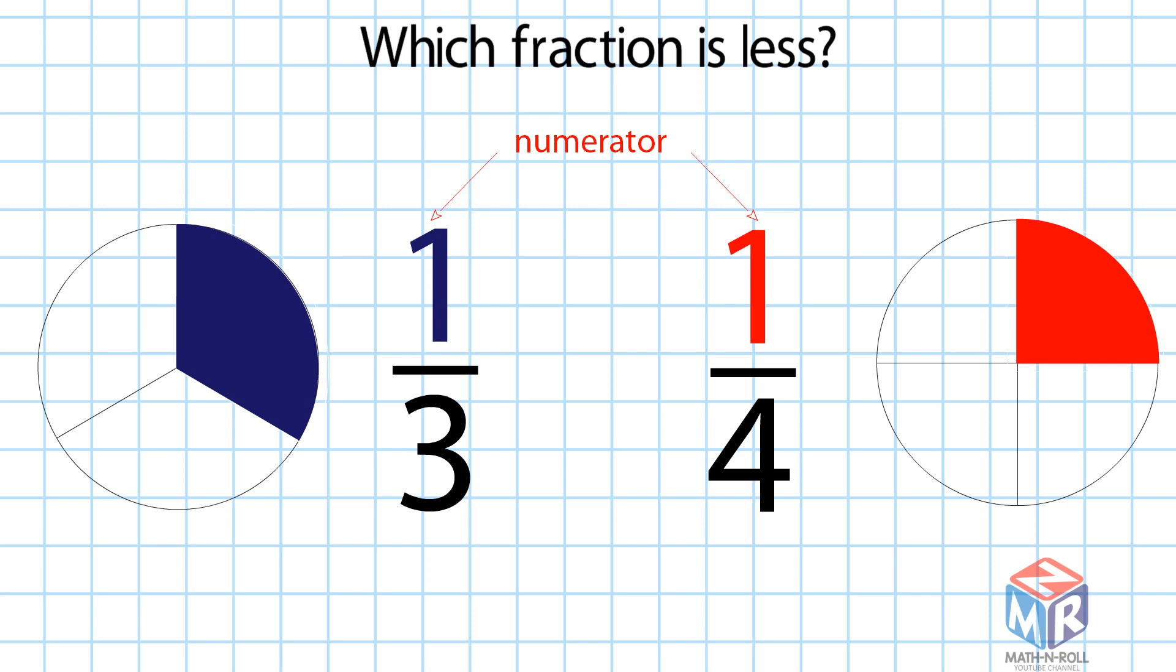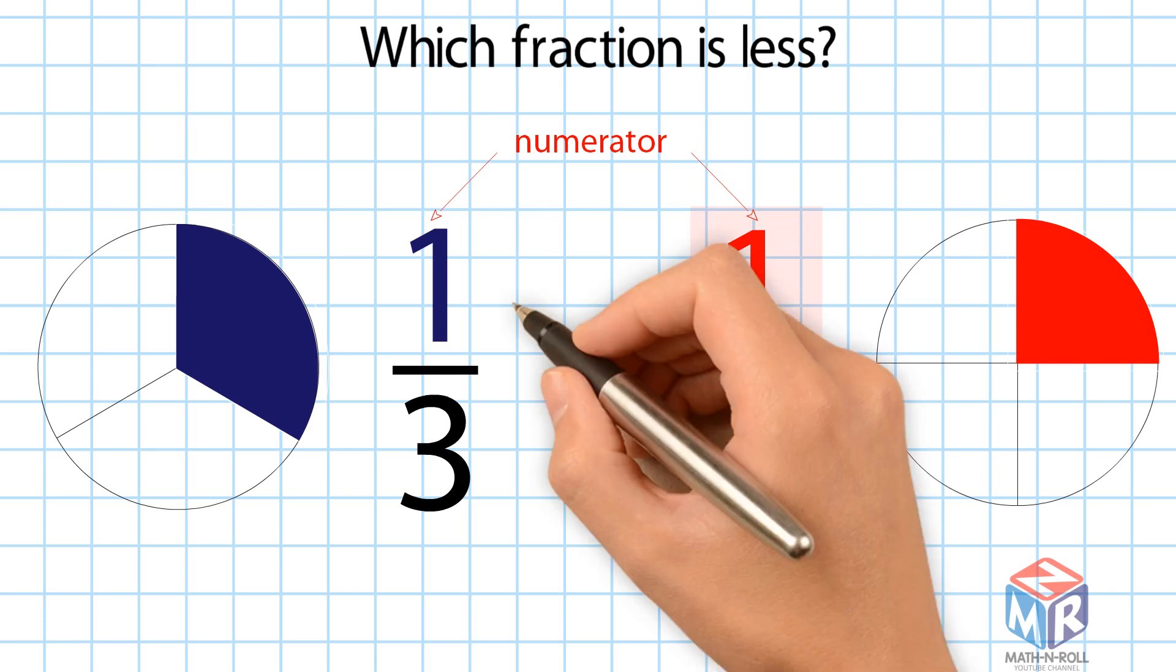So, less of the second shape is colored. 1 over 4 is less than 1 over 3.